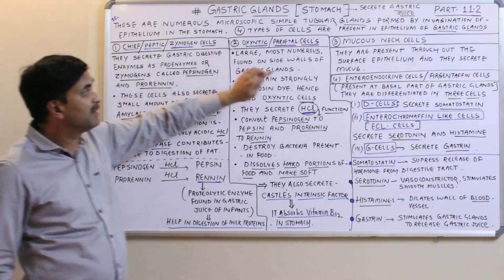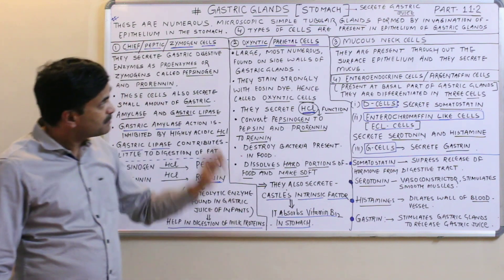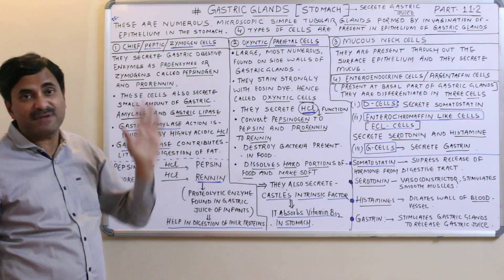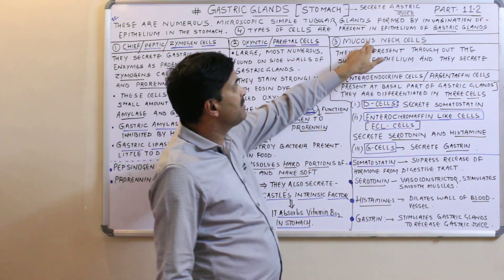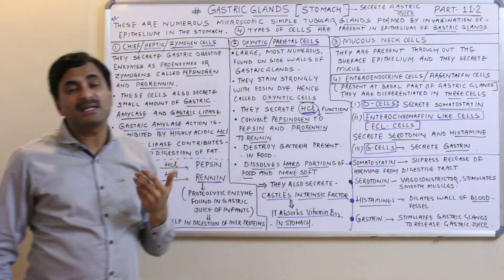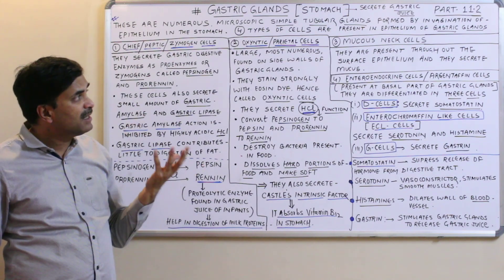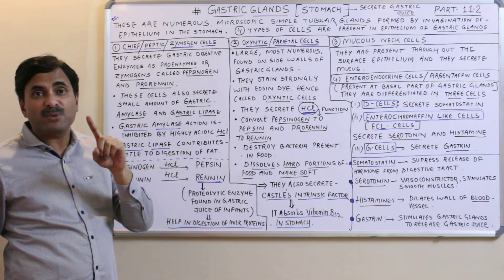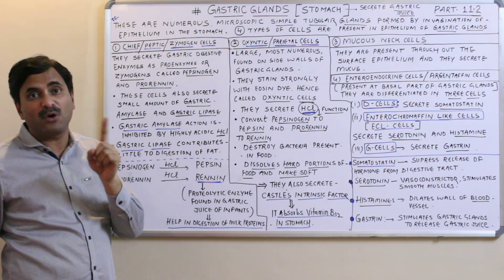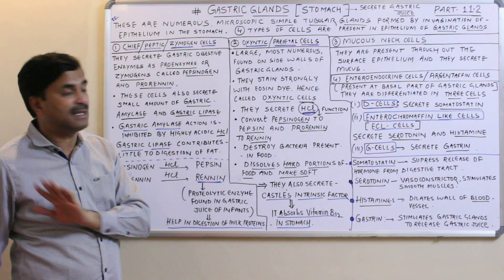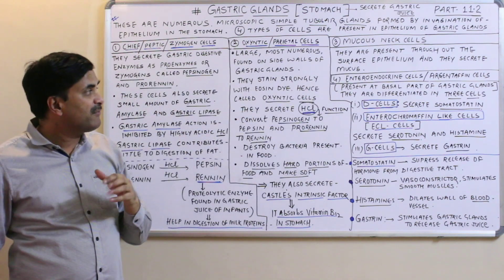The third cell type is the mucous neck cells. They are present throughout the surface epithelium, and as the name indicates, they release mucus. Mucus protects the stomach wall from the harmful effect of the highly acidic HCl.